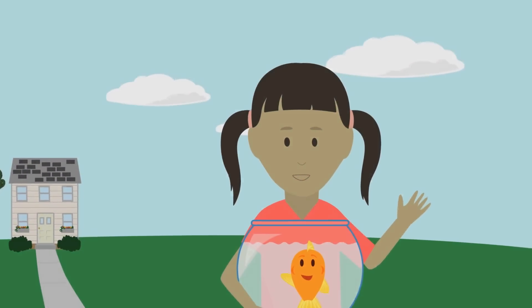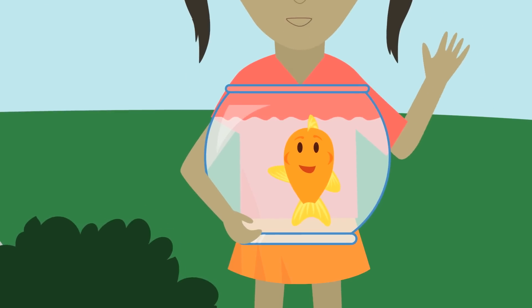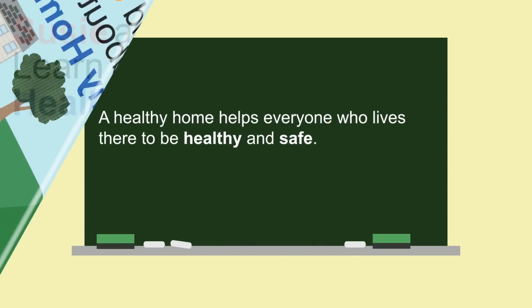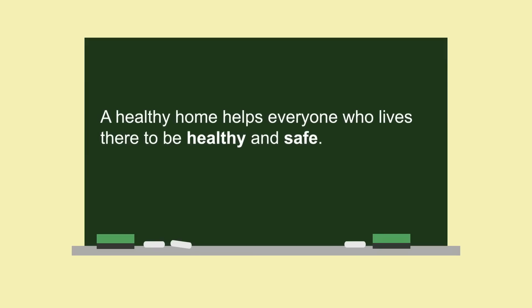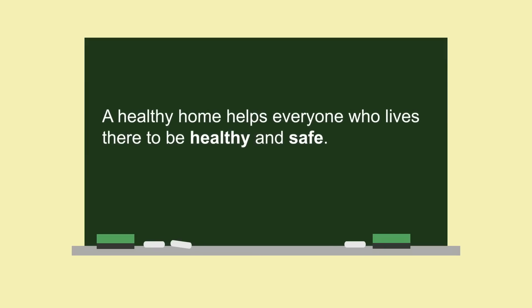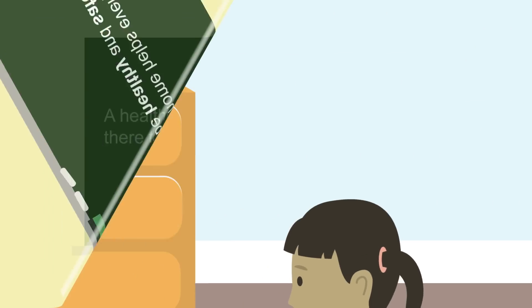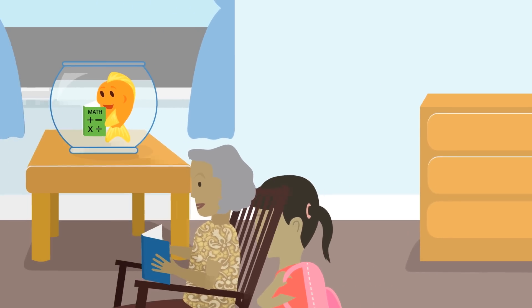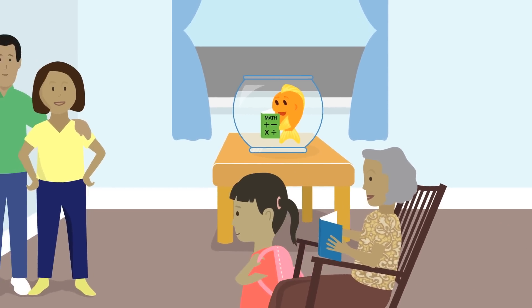This book is about how Susie and Jerome learn about a healthy home. A healthy home helps everyone who lives there to be healthy and safe. Susie Be Careful is funny and smart, a girl who is helpful and has a good heart.